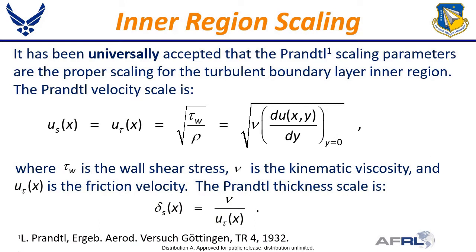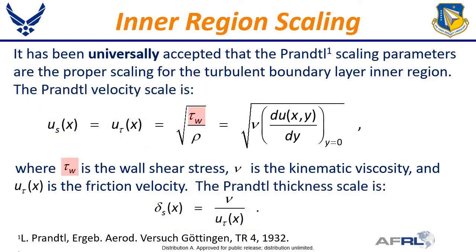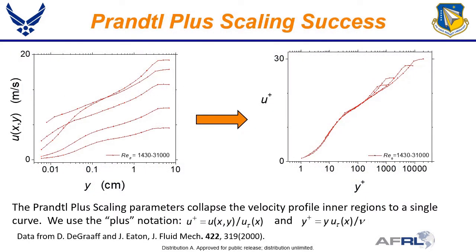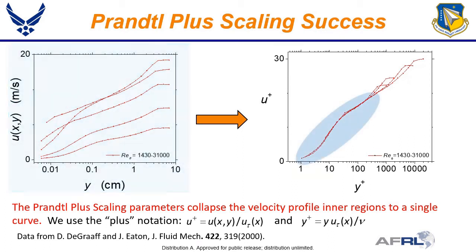It has been universally accepted that the Prandtl Plus parameters are the proper scaling for the turbulent boundary layer inner region. The Prandtl velocity scale is given by the friction velocity u_tau, and the length scaling parameter is the kinematic viscosity divided by the friction velocity. Notice that the Prandtl approach is based on the one parameter that is experimentally accessible: the wall shear stress. Prandtl converted this velocity derivative into a length and velocity scale. The one reason why the Prandtl scaling parameters have been considered universal is apparently they work so well. Here is the same data from DeGraff and Eaton, now using a log scale. Notice how the Prandtl Plus scaling collapses the inner region to a single curve — an indication of similarity.